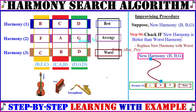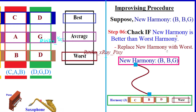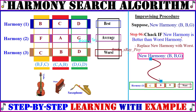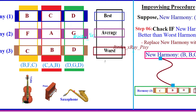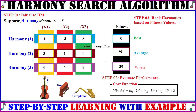After generating the new harmony B B G, we evaluate its performance and check whether it is better than the worst harmony in the harmony memory. If the new harmony is better than the worst harmony, we replace the worst harmony with the new harmony. The third harmony is currently the worst, so after evaluation, if the new harmony value is better, we replace it.